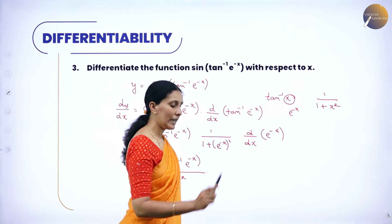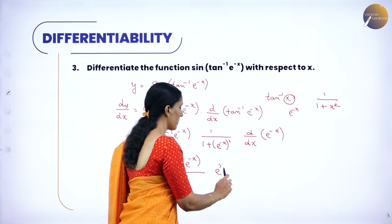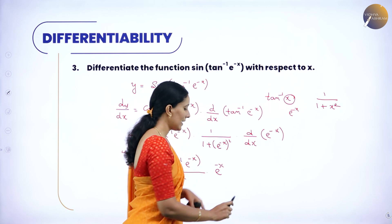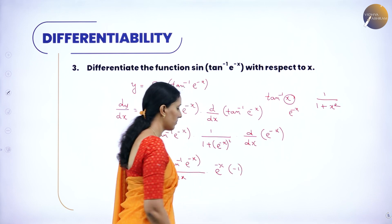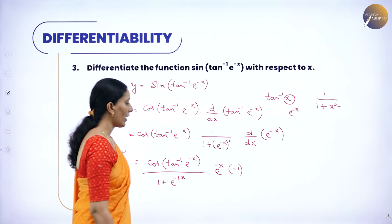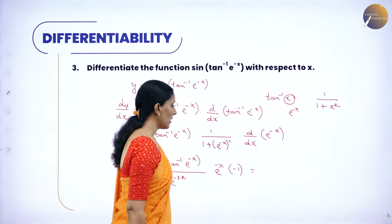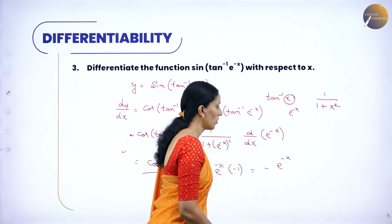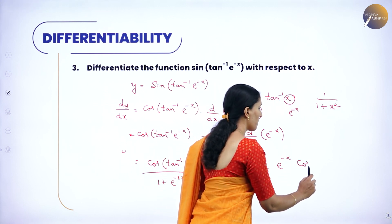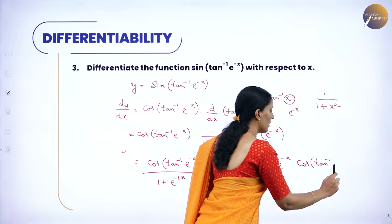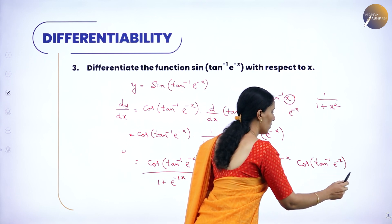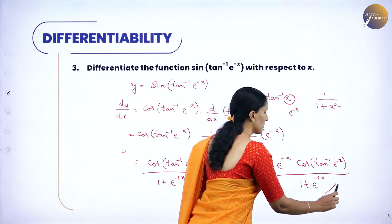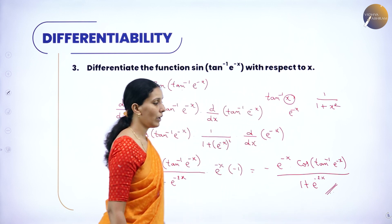What is the derivative of e power x? It is e power x. But here instead of x we have minus x. The derivative of minus x is minus 1. So therefore, when you rewrite this, it becomes: minus e power minus x into cos of (tan inverse e power minus x), all divided by (1 plus e power minus 2x). This is the derivative of the given function.